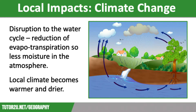One of these includes climate change on a local scale. The water cycle is disrupted by deforestation as a loss of trees means less evapotranspiration. This means that less moisture is returned to the atmosphere, meaning that fewer clouds are formed, which makes the local climate drier. Recycling water acts as a cooling system, so without this the climate gets warmer, and a drier, warmer climate is bad for local people and agriculture.